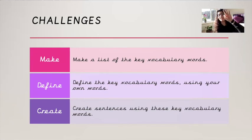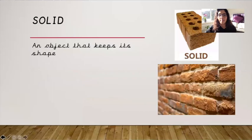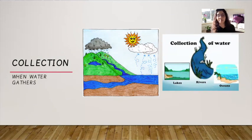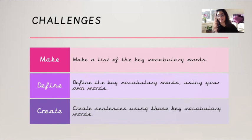And the final challenge, challenge number three, is to create sentences using these key vocabulary words. So if I was to give you an example, collection. Collection is when water gathers. If I wanted to put collection in a sentence, I would say the river Thames is an example of where water gathers, also known as collection. That could be my sentence for it. So you have to create sentences using those key vocabulary words.